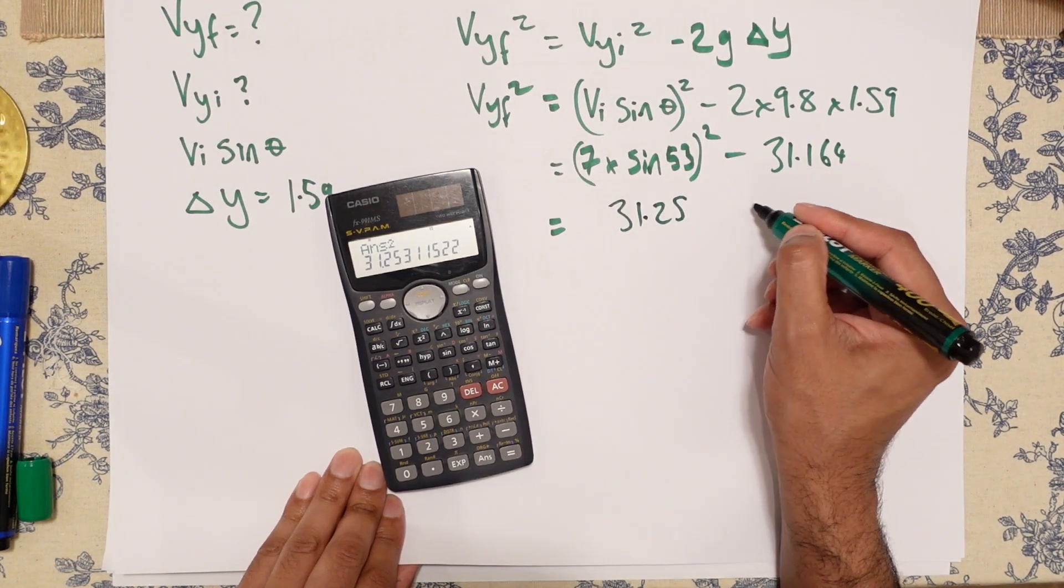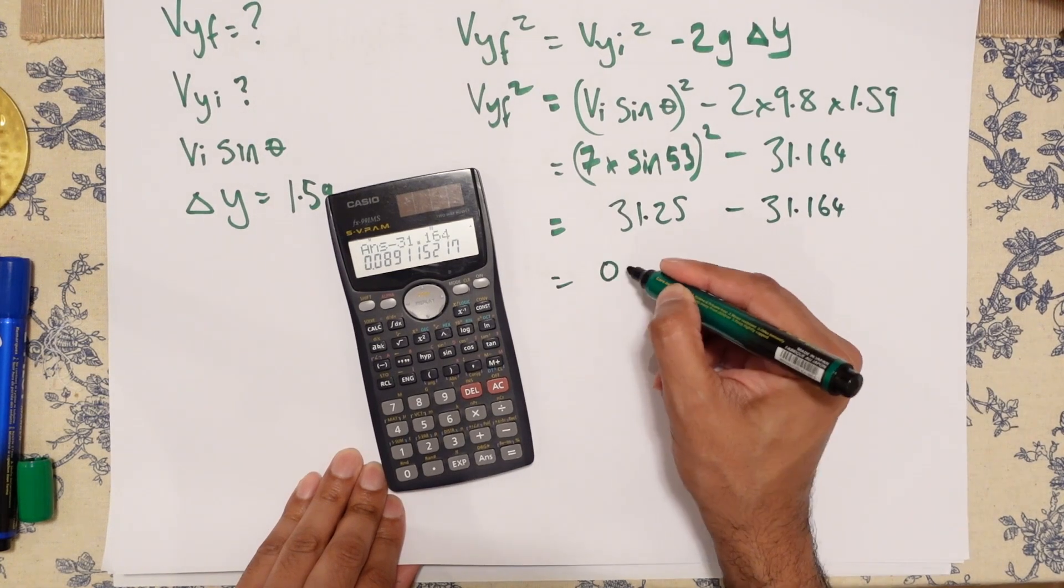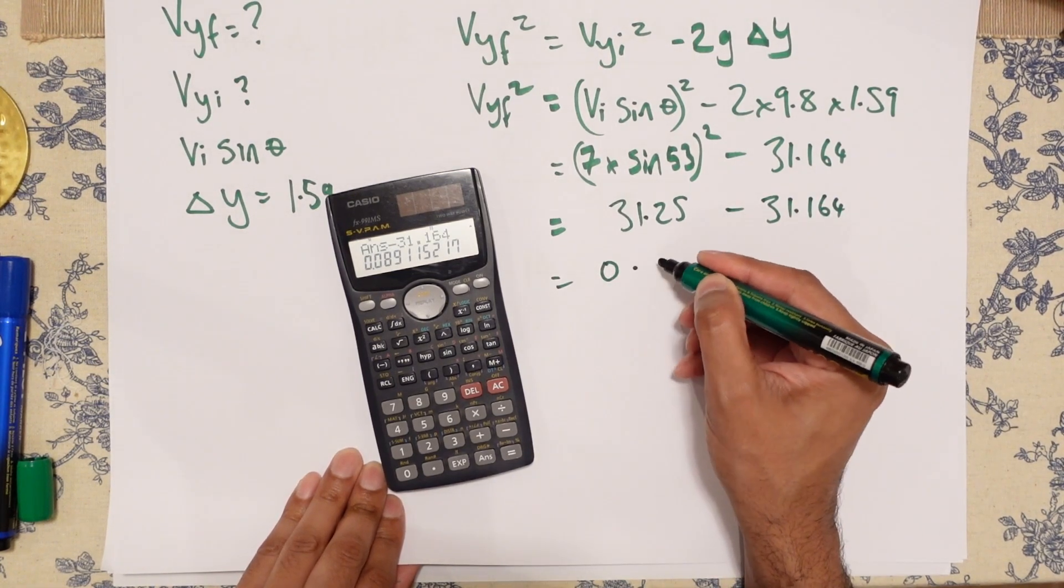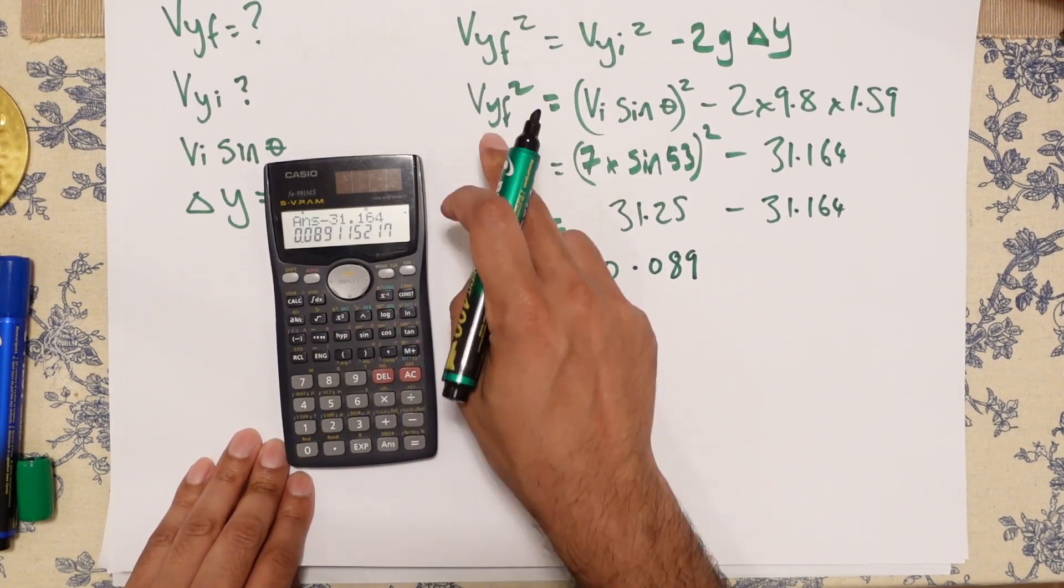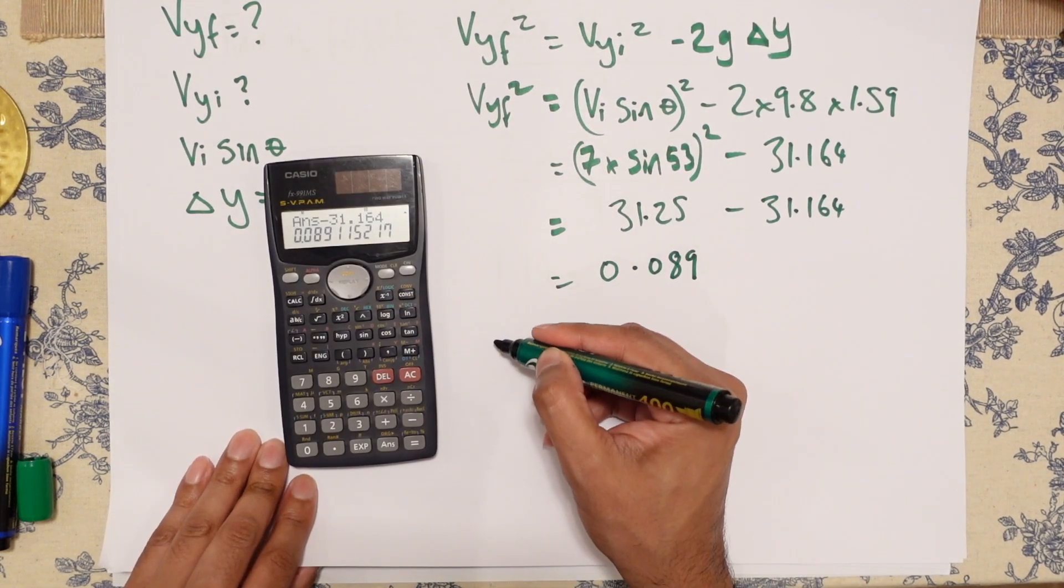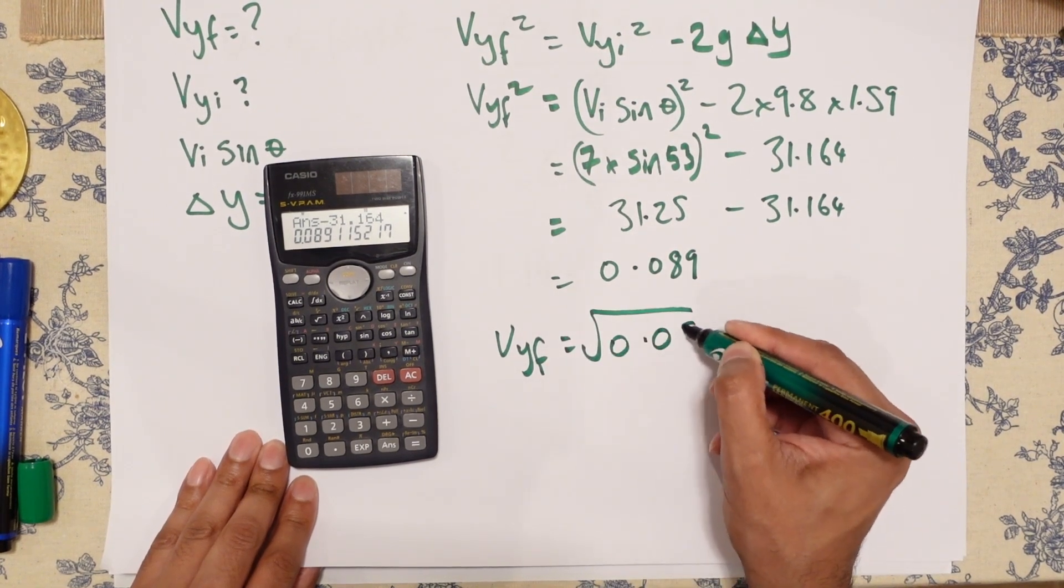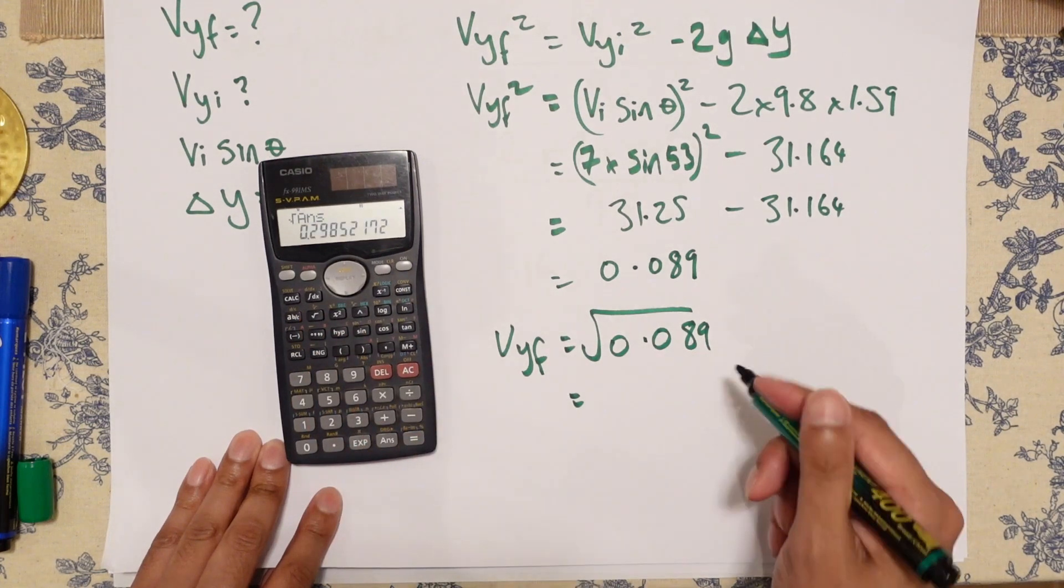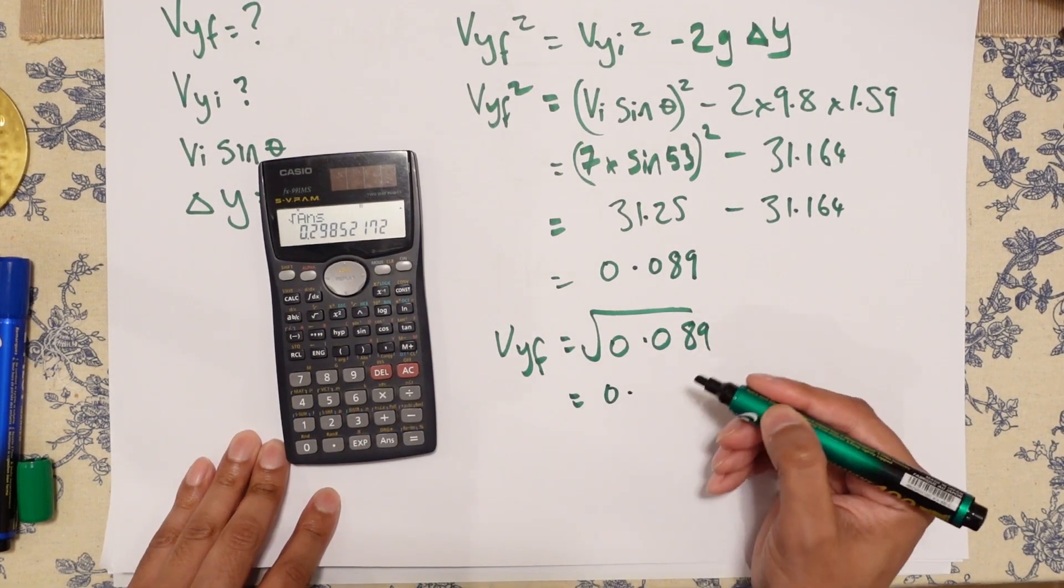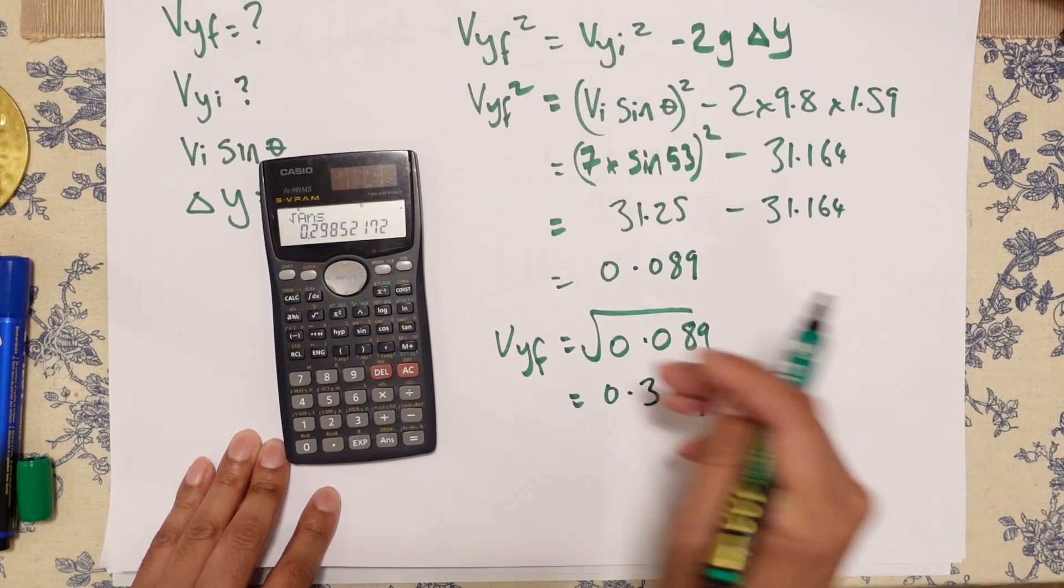31.25 minus 31.164, 0.089. But that's for the VYF squared. So VYF is a square root of that, which is 0.298, which is basically 0.3 meters per second.